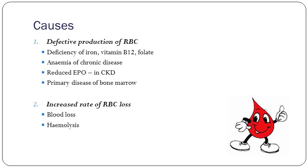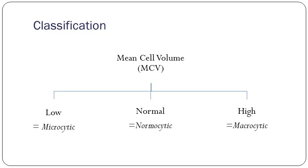Causes of anemia can be split into two: defective production of red blood cells and increased rate of red cell loss. Common causes of defective production include deficiency of iron, vitamin B12, and folate; anemia of chronic disease; reduced erythropoietin; and diseases affecting the bone marrow. Blood loss and hemolysis cause increased red cell loss. The way of classifying causes is to look at the MCV: low MCV is microcytic, normal MCV is normocytic, high MCV is macrocytic anemia.